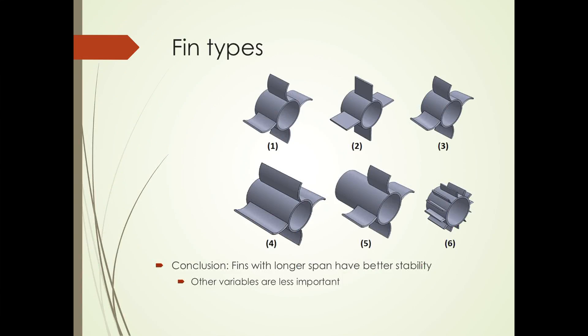Several different fin types were investigated. It was found that fins with longer span have better stability. By span, I just mean the lateral length of the fins. Other variables were found to be less important — for example, the chord length, which is the longitudinal length, and other variables.